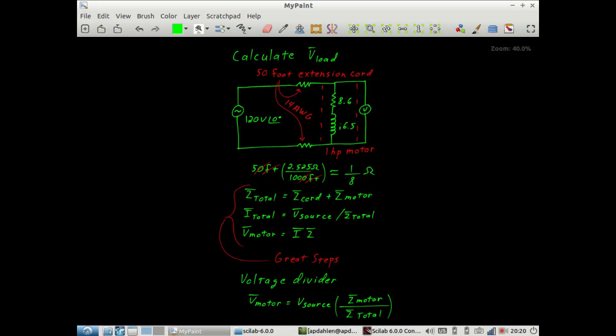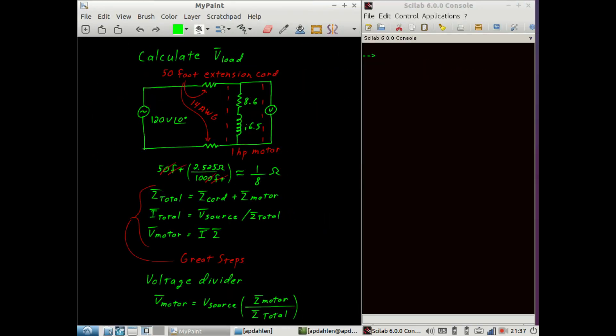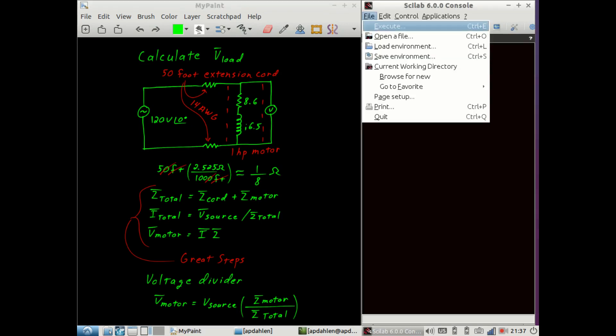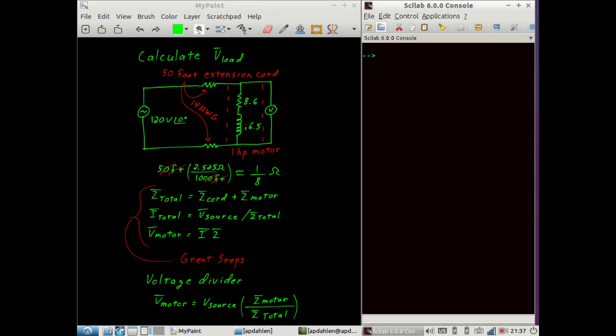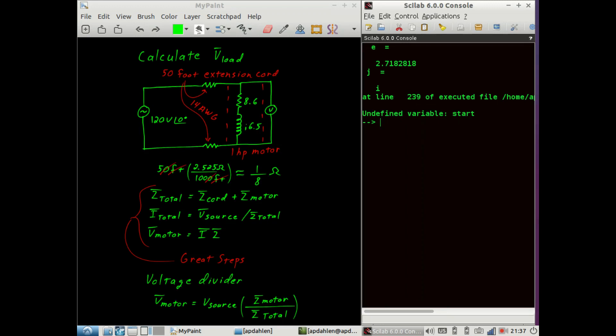At this point, we can shift over to Scilab to perform the calculations. I like to use Scilab because we can symbolically follow those great steps. If you're doing your homework, you can just enter it straight into your calculator. The first thing we need to do when we launch Scilab is to execute the Scilab.SC script. Look to the comments below and you'll find a link to this script. Now that that's done, we can start entering our various circuit parameters.